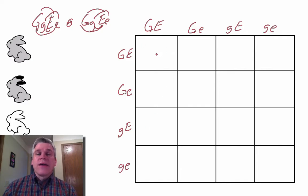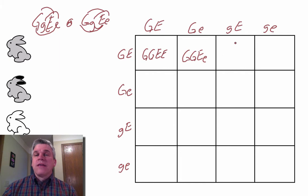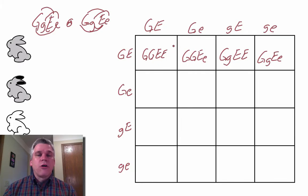So in each of these boxes, now I'm going to have four letters. I want to keep my G's and E's together. So for instance, this would be big G, big G, big E, big E. In the second box, it's going to be big G, big G, big E, little e. In the third box, big G, little g, big E, big E. And in the last box in this first row, big G, little g, big E, little e. So you see how this was all combined. We have two dominant alleles for G, two dominant alleles for E, two dominant alleles for G, one dominant, one recessive for E, and so on.